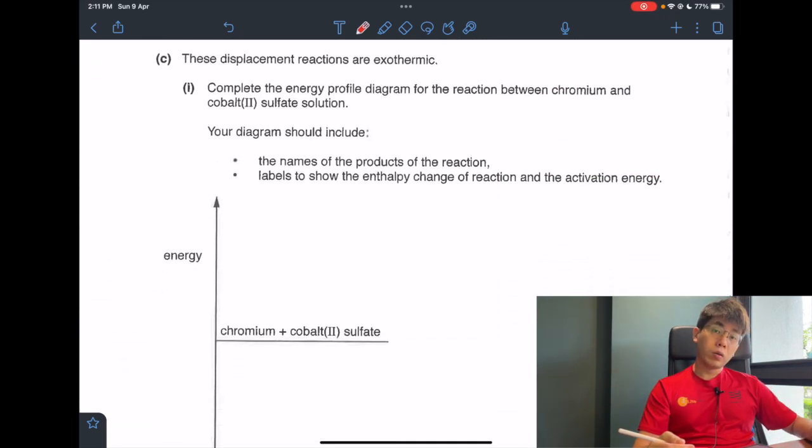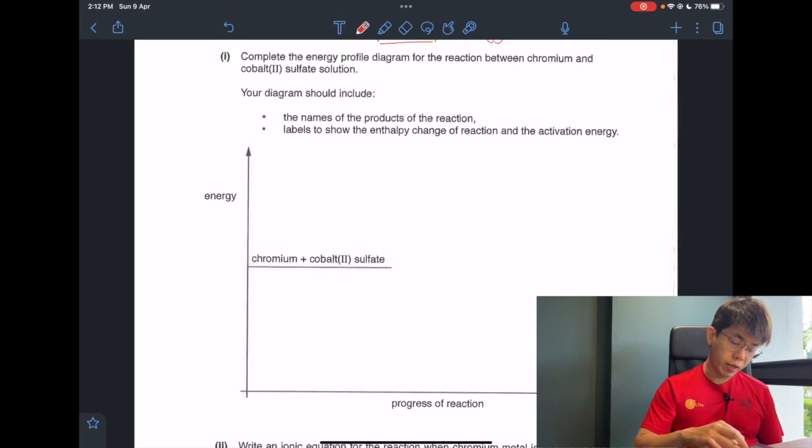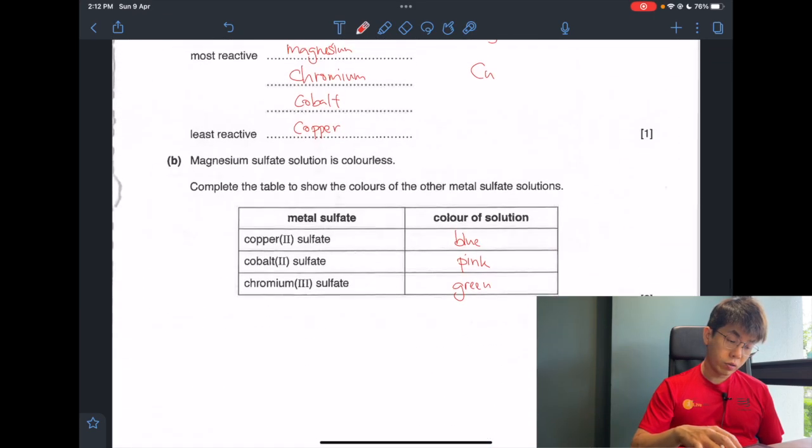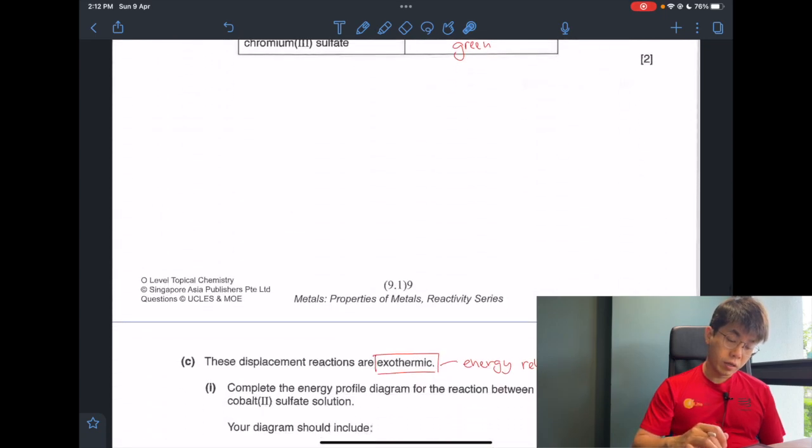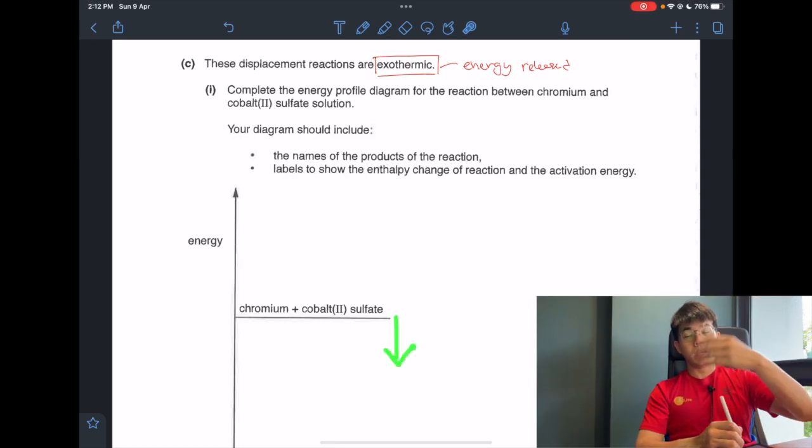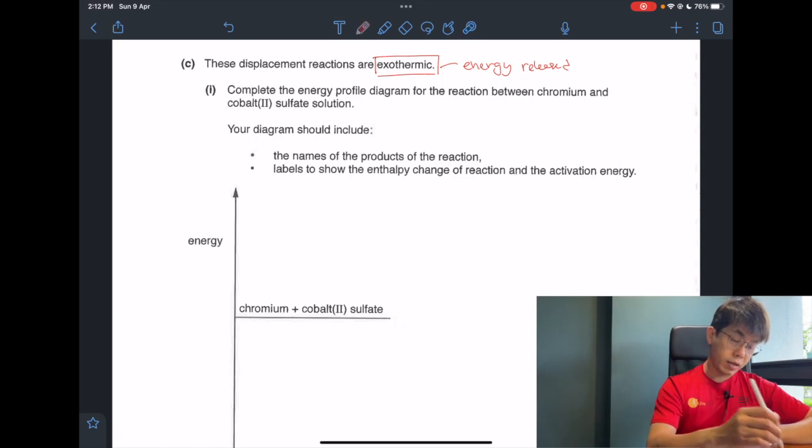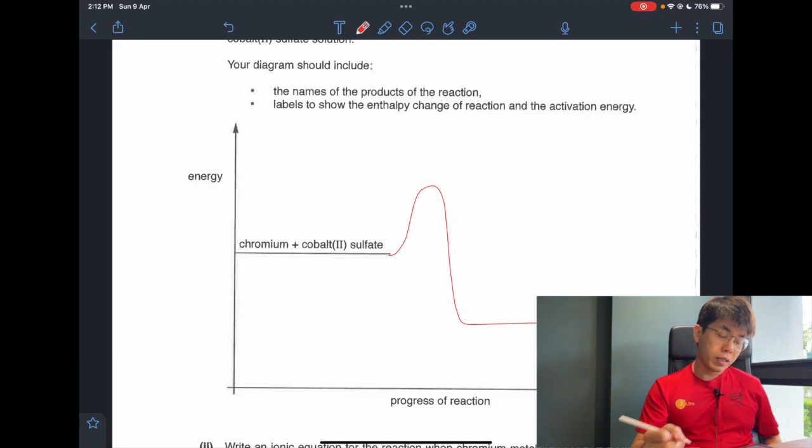Let's move on to the next part. These are all displacement reactions, and it said that the displacement reaction is exothermic. Exothermic means energy is released. Exo means exit, so energy released. I need to draw an energy profile diagram of chromium and cobalt sulfate. Let's check chromium and cobalt sulfate. Did the reaction occur? Yes, reaction occurs. So it needs to be exothermic. That means the energy should go down because energy is released. I release energy, so I have less energy in the end. So I need to put something here, lower, and then my activation energy.